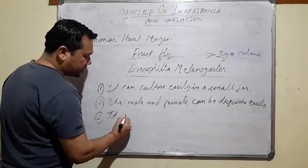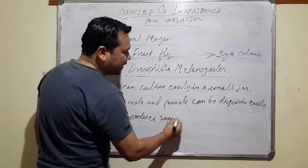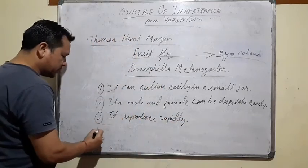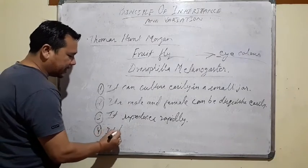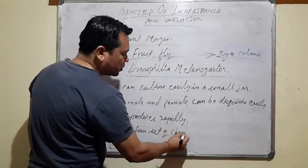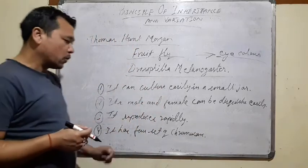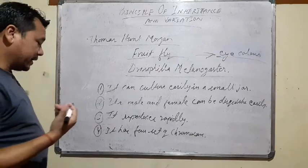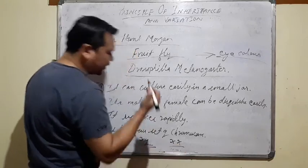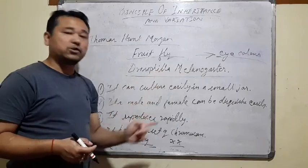It reproduces rapidly. It has 4 sets of chromosomes. It produces X and Y chromosomes, just like X and X in human beings. So these are the reasons that Morgan chose Drosophila melanogaster for his experiment.